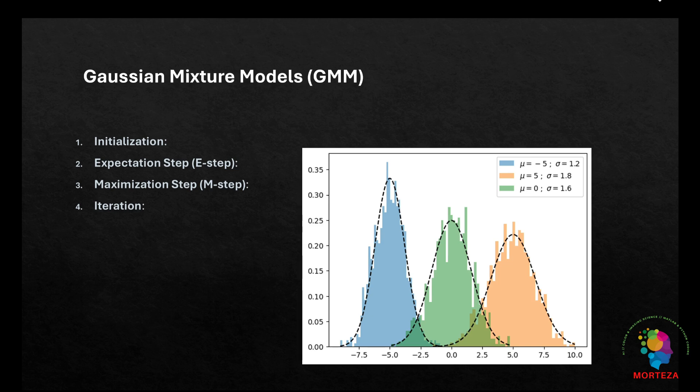Gaussian mixture models, on the other hand, take a probabilistic approach to clustering. Unlike k-means, which assigns each data point strictly to one cluster, the Gaussian mixture model estimates the probability that each point belongs to each cluster. It assumes the data is generated from a mixture of Gaussian distributions and works through the following steps: initialization, expectation step or E step, maximization step or M step, and iteration.